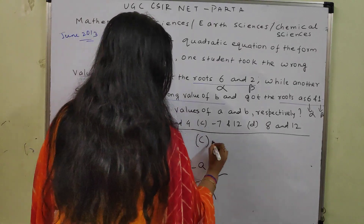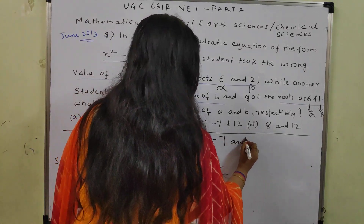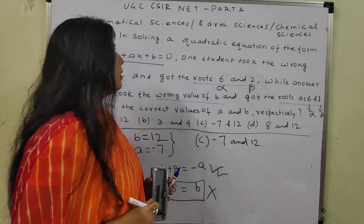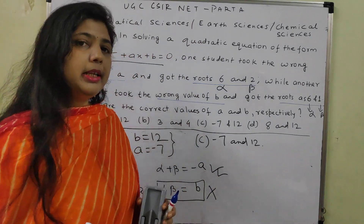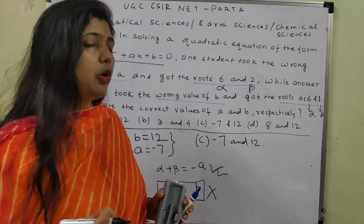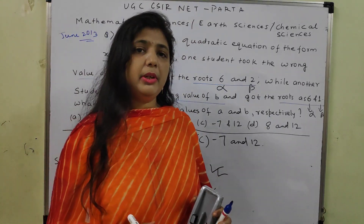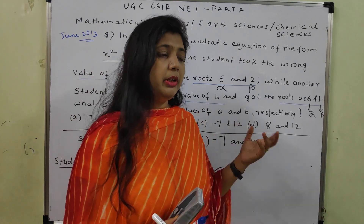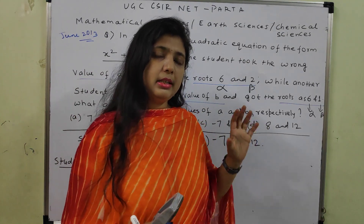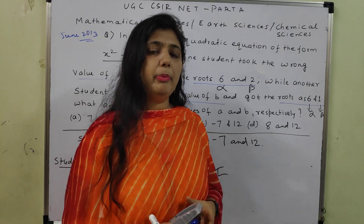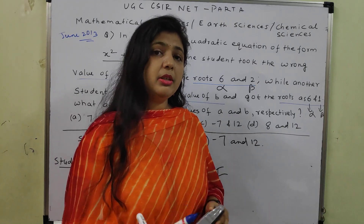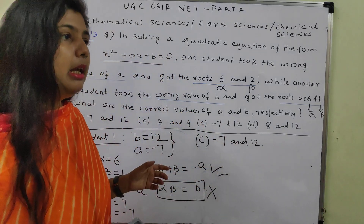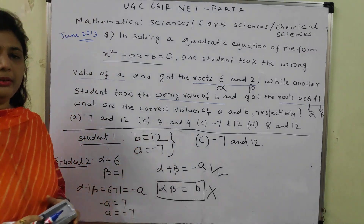The correct option is C: −7 and 12. This type of question appears not only in CSIR Net but also in most competitive examinations from the 10th standard level onward.